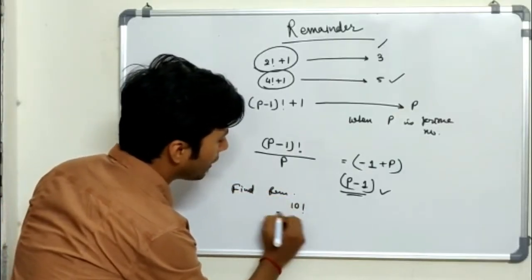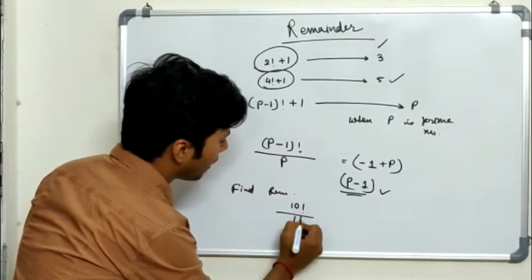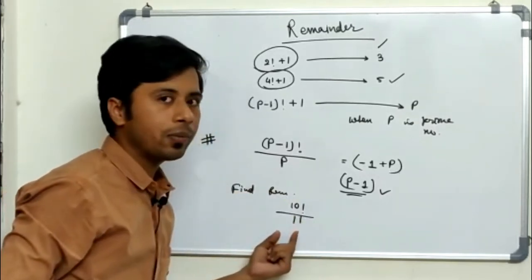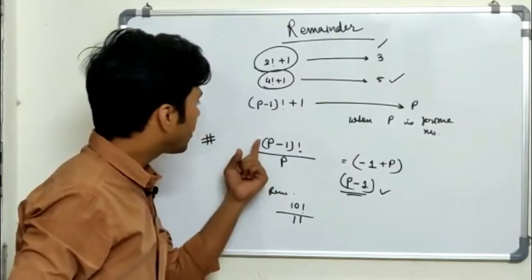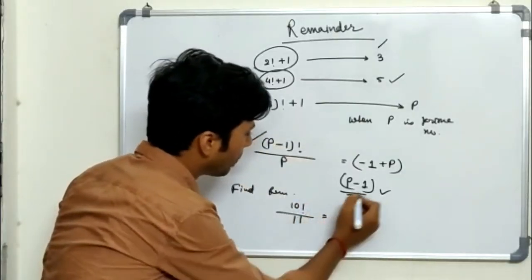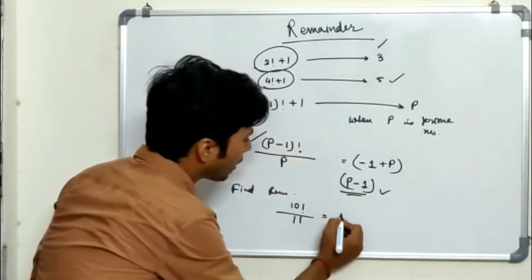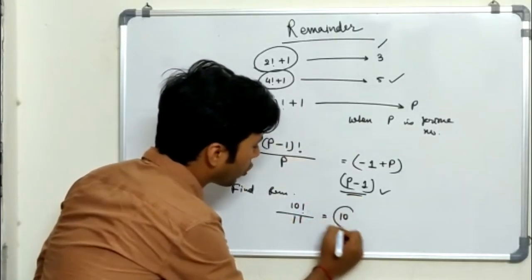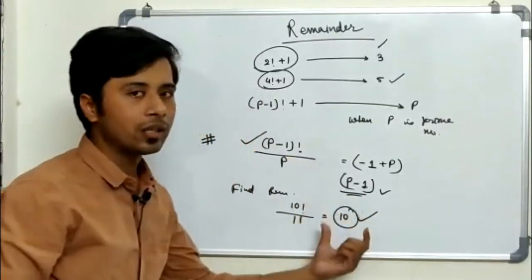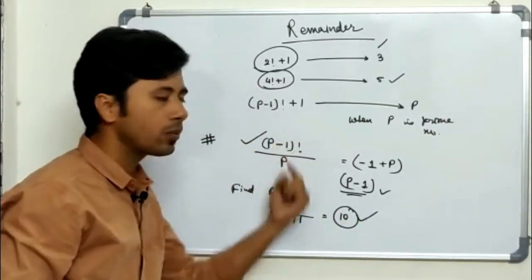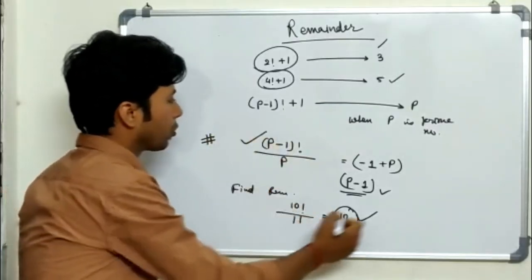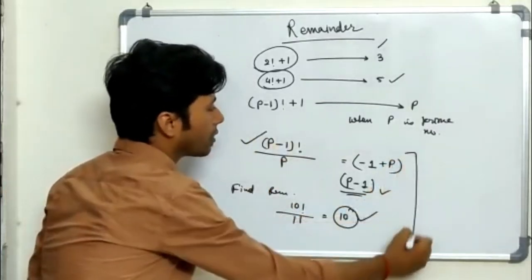Since I know the negative remainder concept, I need to add the divisor to it: minus 1 plus p gives p minus 1. So always remember: whenever you have a question like (p−1)! divided by p and they ask you to find the remainder, your answer is always going to be p−1 itself. For example, when 10! is divided by 11 — 11 is prime, so the remainder is 10. This is known as Wilson's theorem.